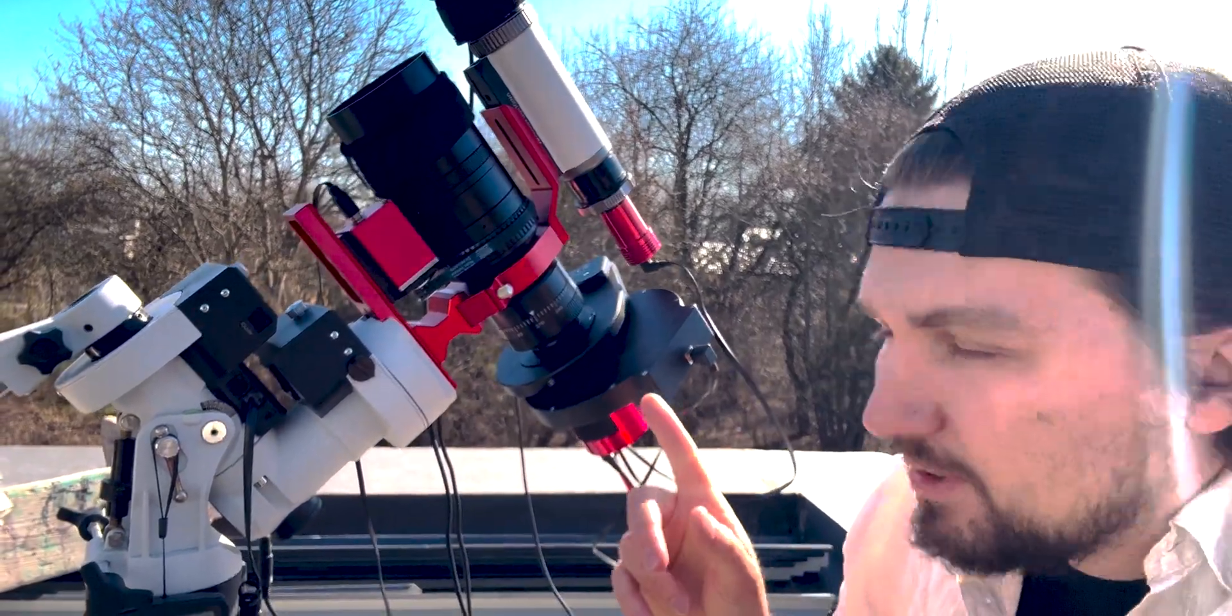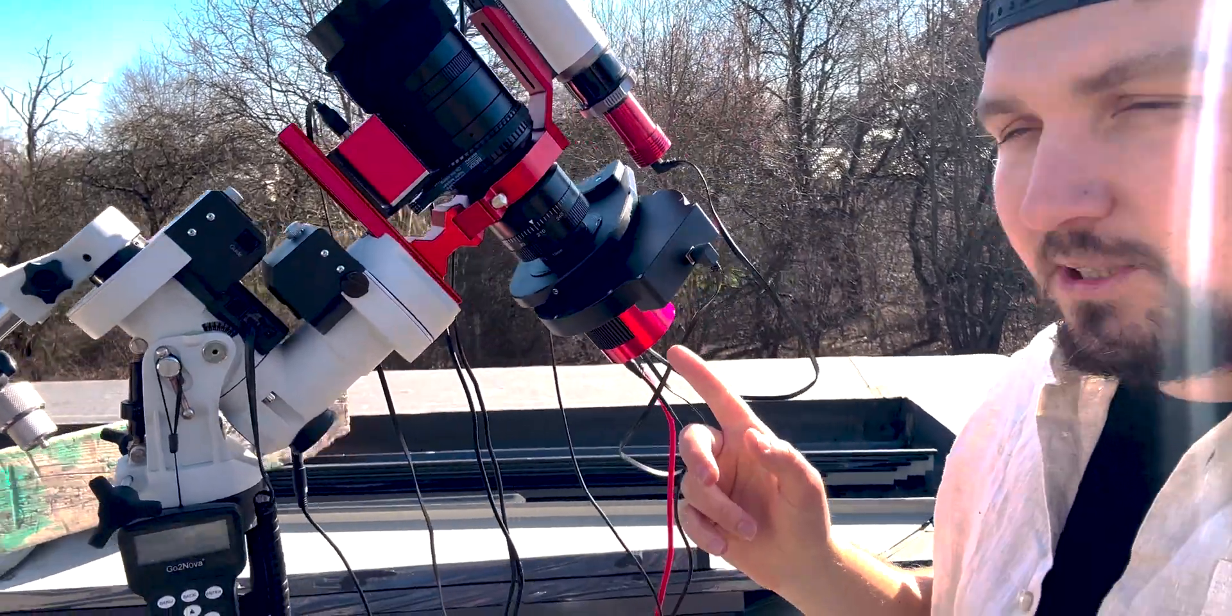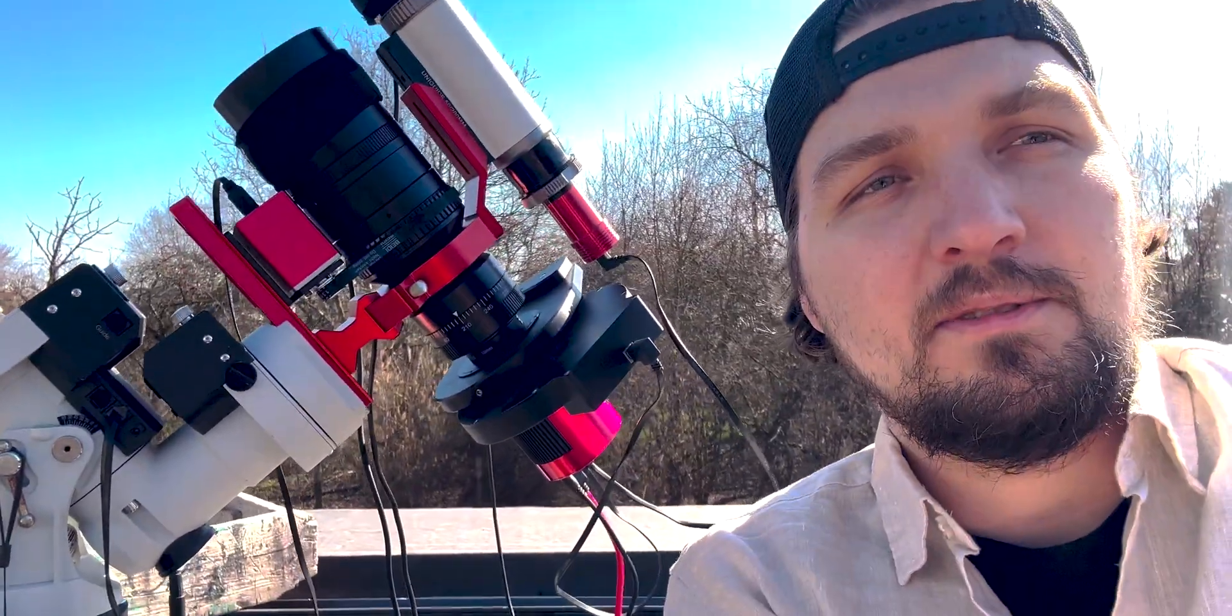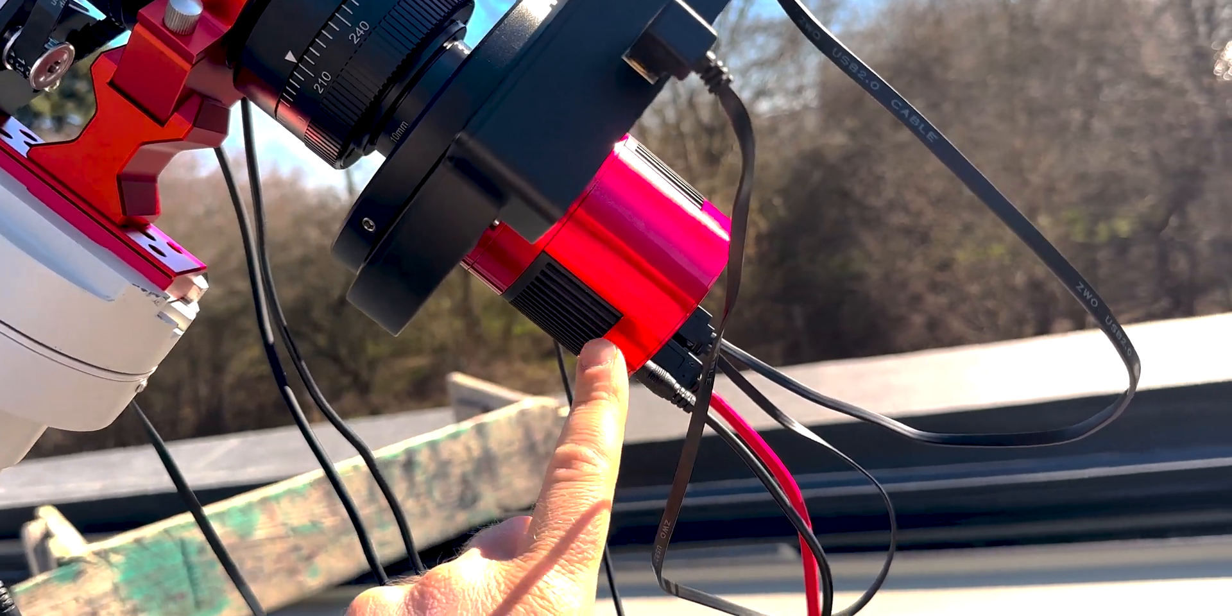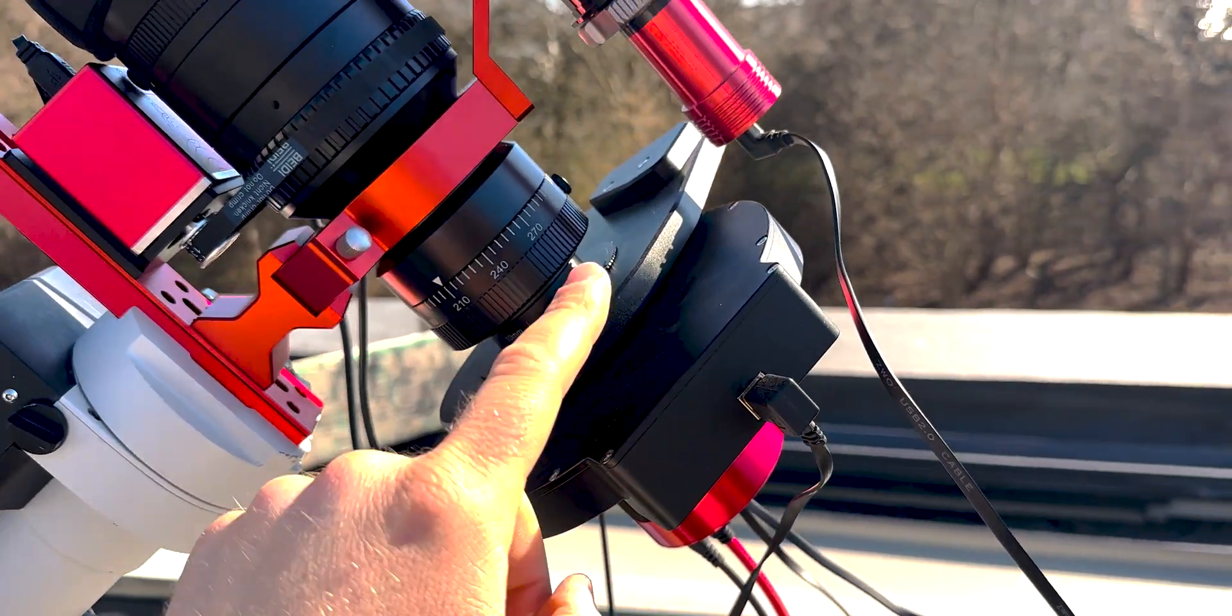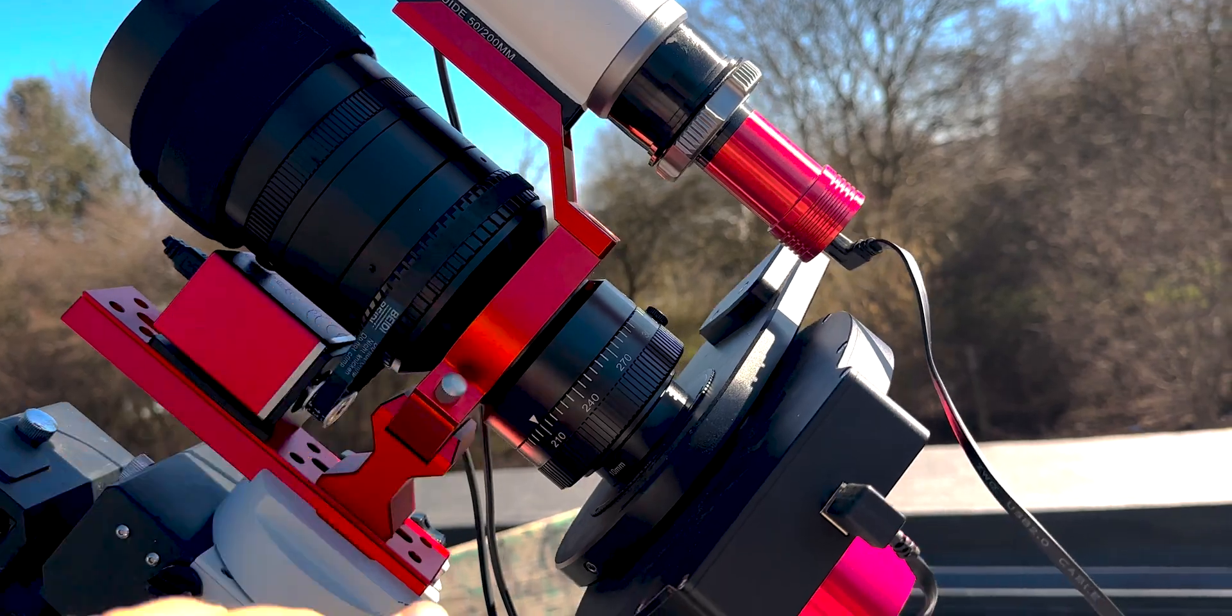And I want to talk about the back focus situation that I have right here. As you can see, I have the - let me actually flip this around. So what I have here is my ASI 294MM Pro from ZWO. I have a filter wheel, I have a rotator, and here is the telescope.